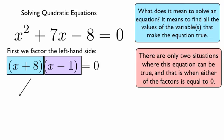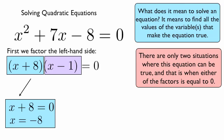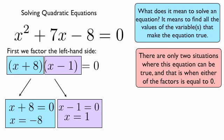So in the first case, we have x plus 8 is equal to 0, which means that x is negative 8. And in the second case, we have x minus 1 is equal to 0, in which case x is equal to 1.